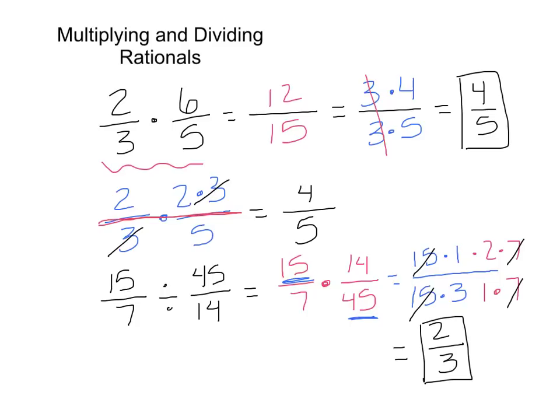There are lots of ways you could have done this. You could have factored all the way down to prime factorization, but once you start noticing that you want to cancel out common factors, that simplifies your factoring process a little bit.